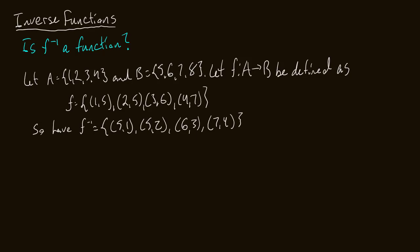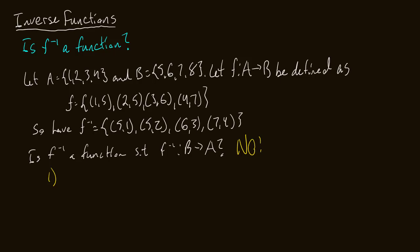Now, is f inverse a function mapping B to A? The answer is a striking no. Why? There are two reasons. One: inputs do not have unique outputs. You'll see 5 maps to both 1 and 2 — we can't have that in a function. So our inputs do not have unique outputs.